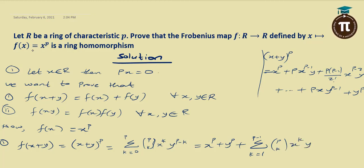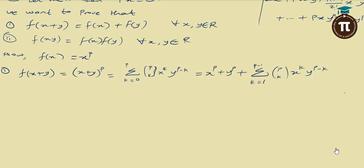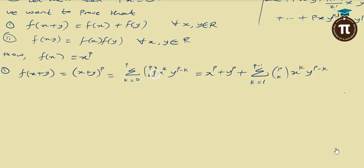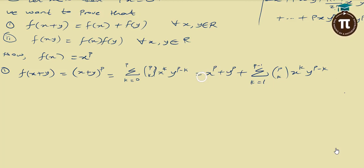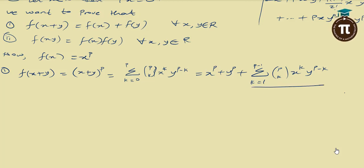Times Y raised to power P minus K. When K is 0 you get Y raised to power P, and when K is P you get X raised to power P — that is why I removed the first and last terms. So I am left with the summation of K starting from 1 to P minus 1 of P-choose-K times X raised to power K times Y raised to power P minus K. What is left is for me to prove that this summation gives 0.